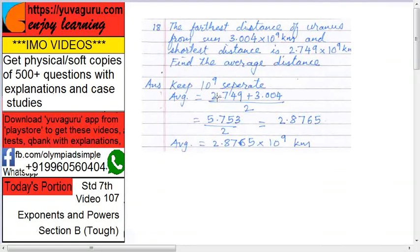So, 2.749 plus 3.004, the whole divided by 2. Add this, divide this, you'll get 2.8765. Now, 10 raise to 9 we had kept it separate, so add it in the answer. Answer is 2.8765 into 10 raise to 9 kilometers.